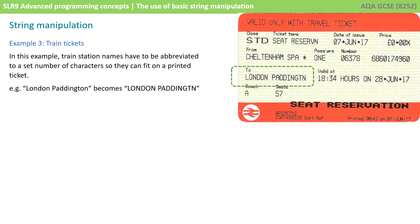Consider the situation of a train ticket. In this example, train station names have to be abbreviated to a set number of characters so they can fit on a printed ticket. With long train station names, for example London Paddington, the string would need to be manipulated so we end up with a shortened form, and again this would be an example of string manipulation.